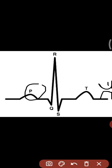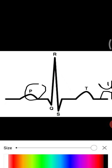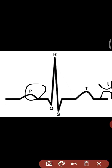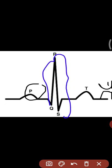The second component is the QRS complex. The QRS complex represents the repolarization of the atria and depolarization of the ventricles, which occur simultaneously.